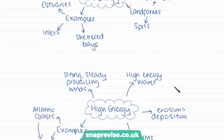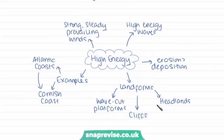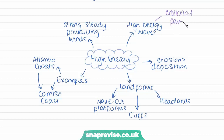Moving on to high energy coasts, this is the complete opposite, where we have high energy waves. They have a lot of erosional power because they are much stronger, and this is because they tend to be driven by strong and steady prevailing winds. We learned in the previous video that it's winds that create the majority of waves, so where we have strong winds, we often find strong waves as well.